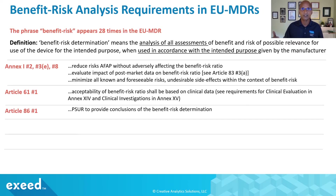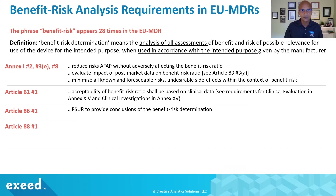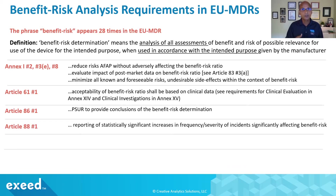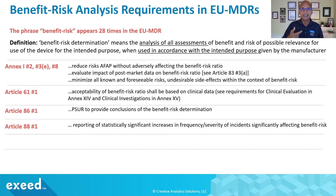Article 86 requires PSURs — periodic reports — to provide conclusions of the benefit-risk determination, which will hopefully evolve over time as new information becomes available. Article 88 covers reporting of statistically significant increases in the frequency or severity of incidents that significantly affect benefit-risk. This is ongoing monitoring, with the emphasis on a statistically significant increase, so some analytical approach is required.